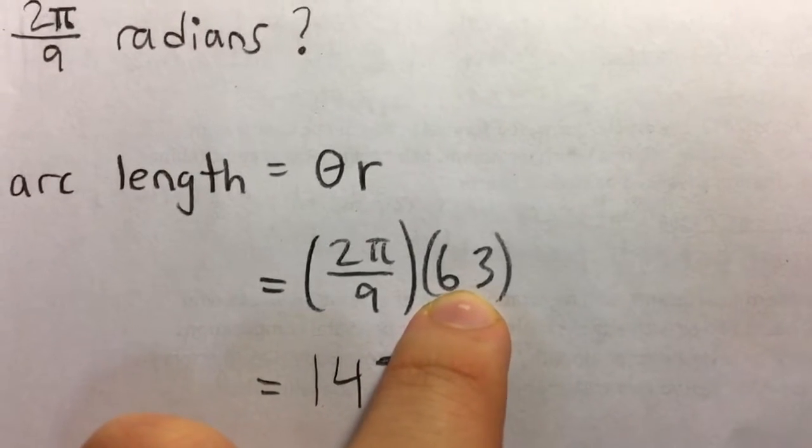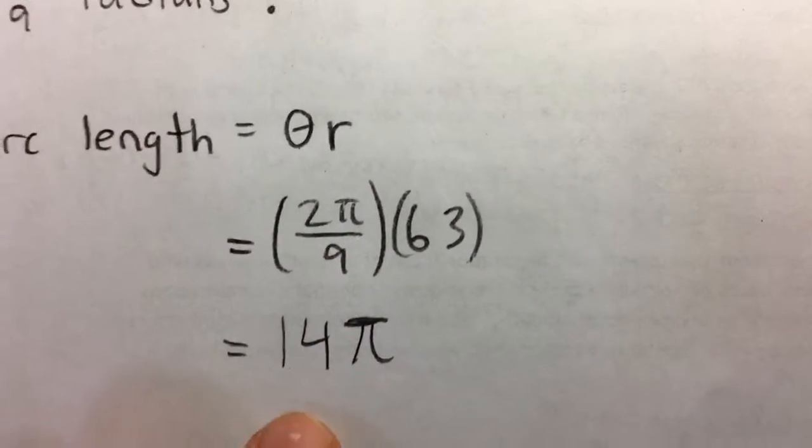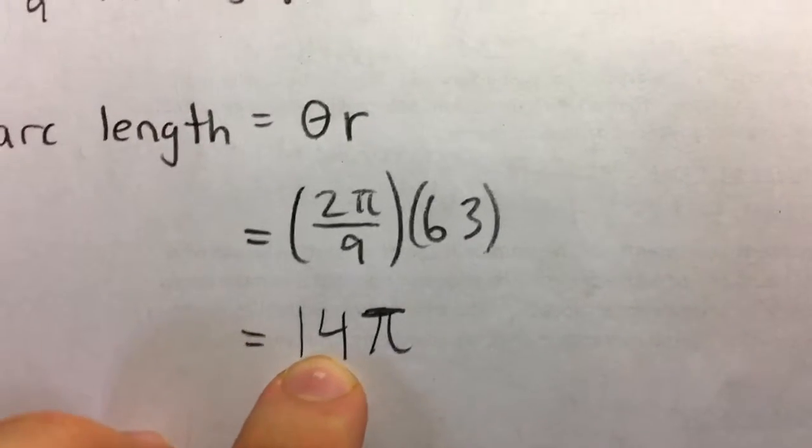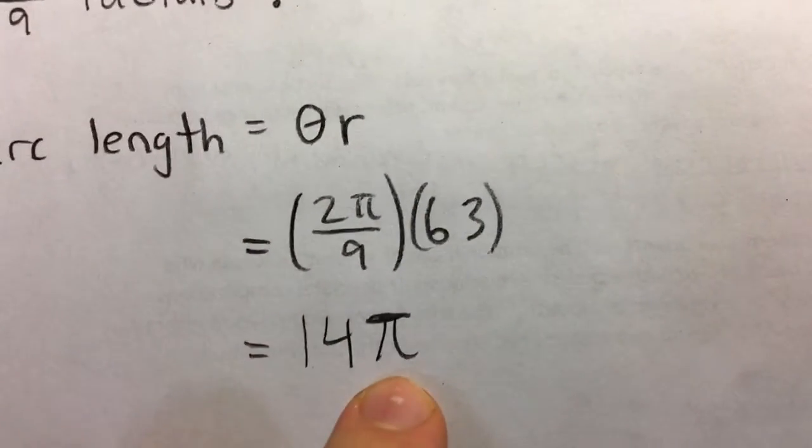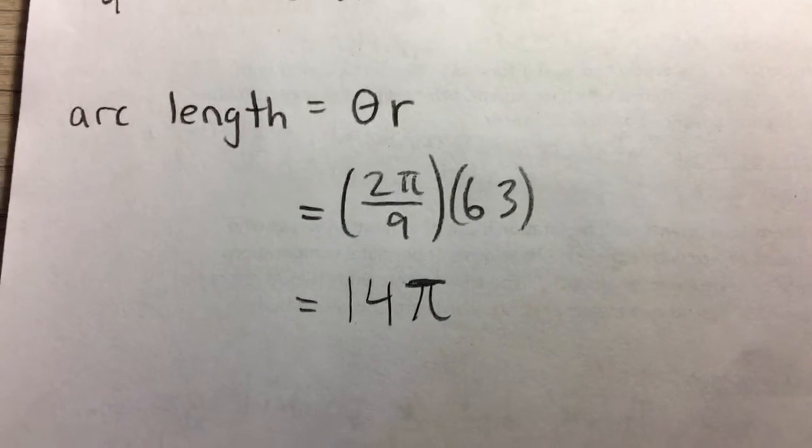We notice here that we can simplify: 63 times 2 divided by 9 gives us 14, and the π stays the same. So our final answer is 14π.